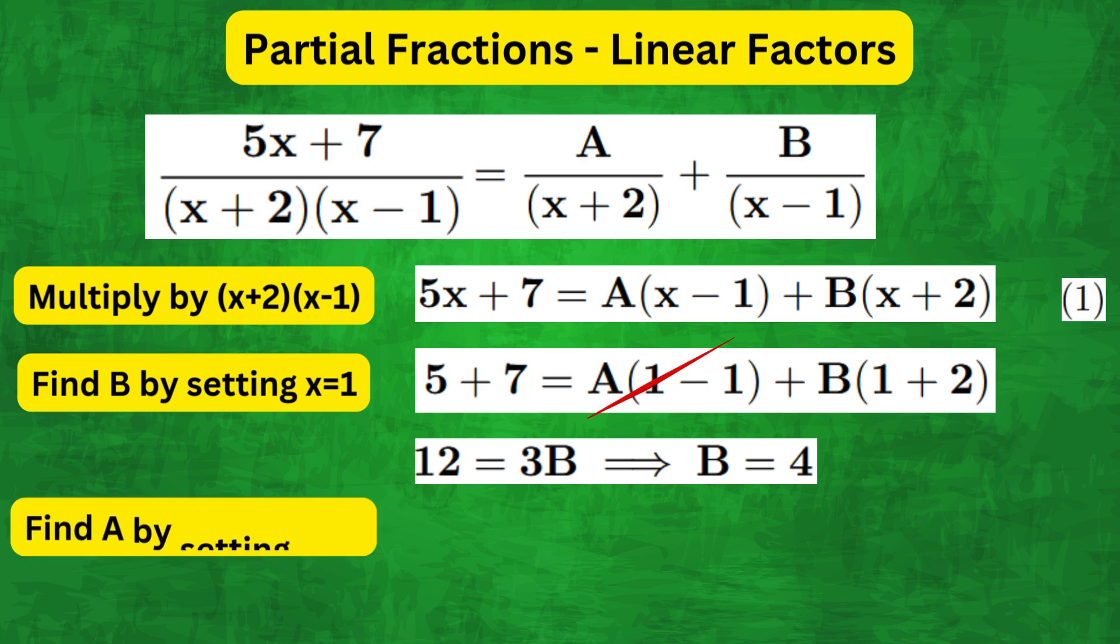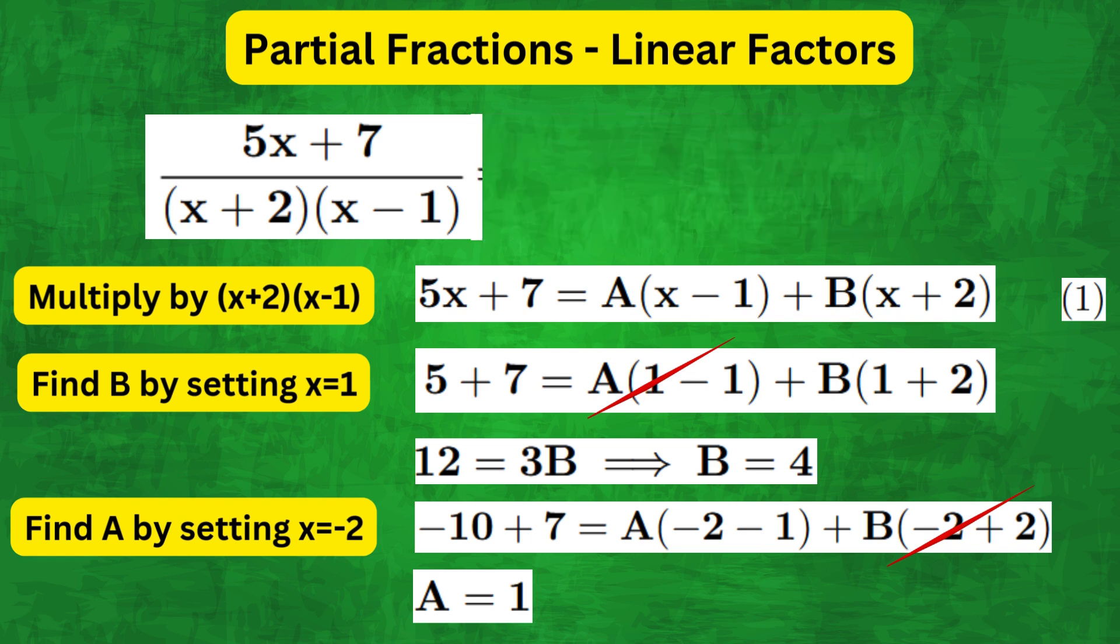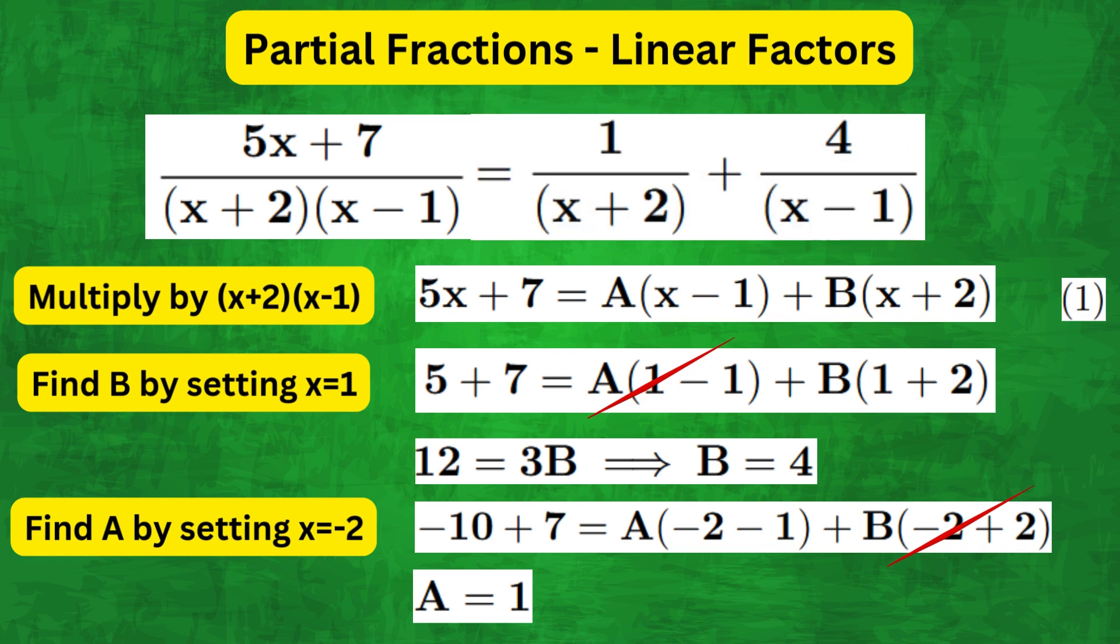Similarly for a, we can set x equals minus 2 in equation 1, so the b term cancels and we get a equals 1. Therefore the final decomposition can be given as 1/(x + 2) + 4/(x - 1).